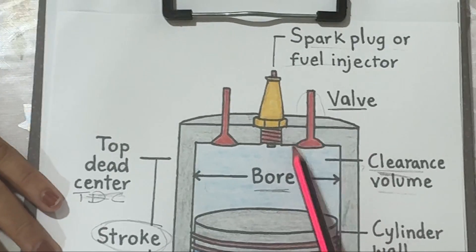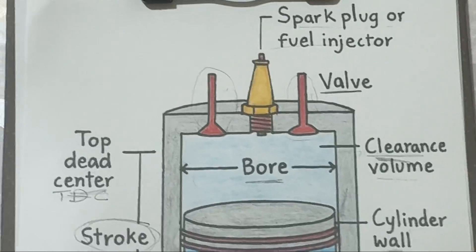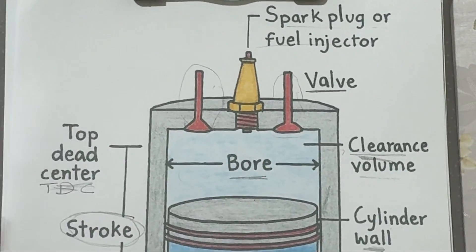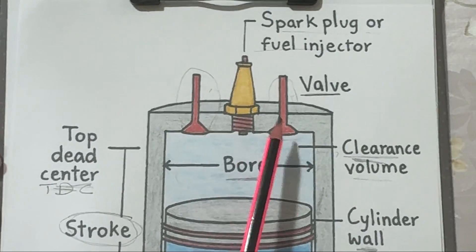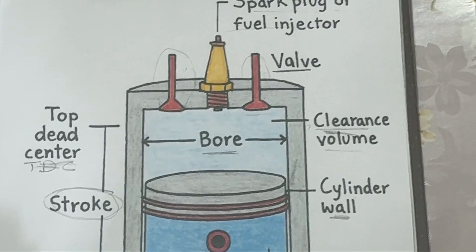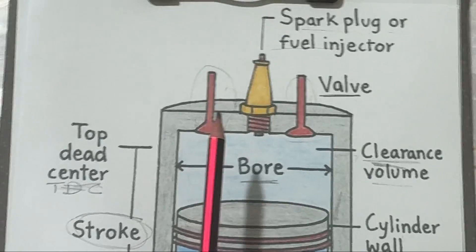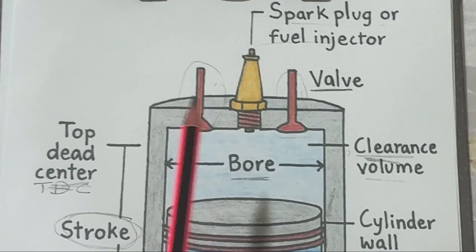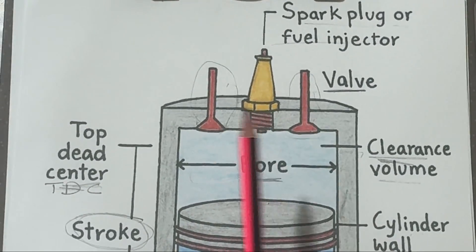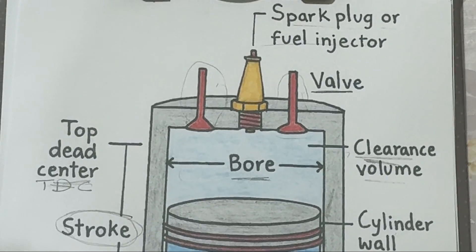There are usually two valves on top of the cylinder. The intake valve lets the air-fuel mixture in; the exhaust valve lets the burnt gases out. These valves open and close at precise timing controlled by the camshaft, ensuring smooth operation of all four strokes: intake, compression, power, and exhaust.